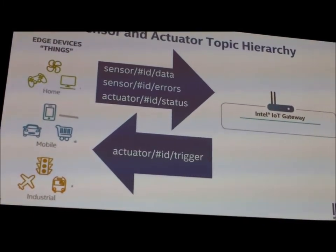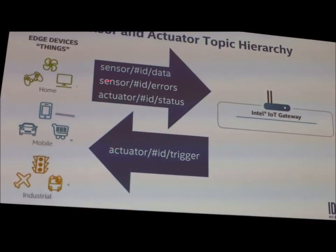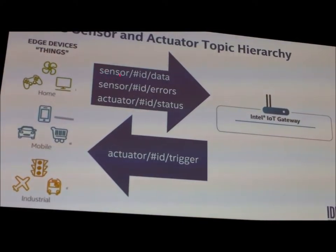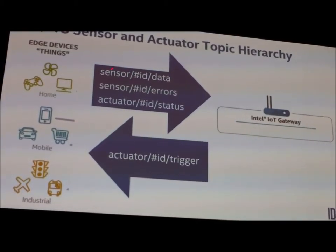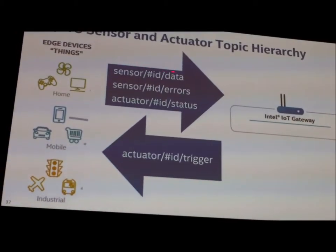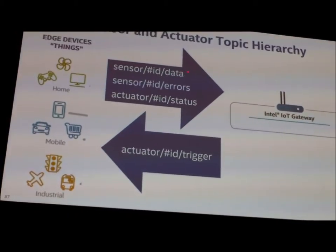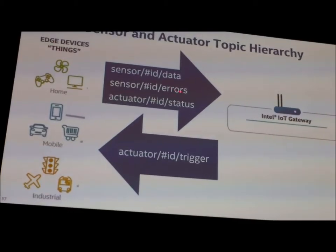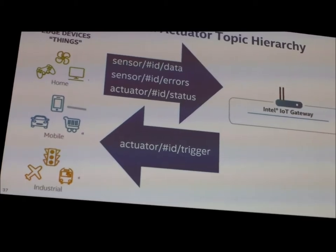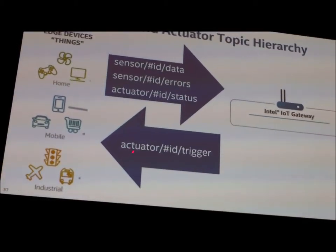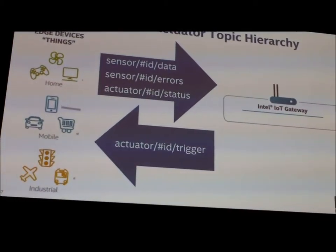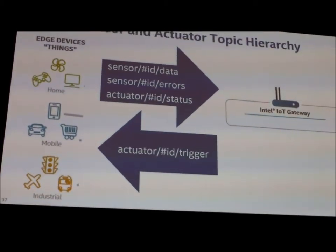For our data, we created MQTT topics. For every sensor on the network, sensors are organized into a hierarchy with a unique ID, and each sensor has data associated with it. We also created an error channel, an actuator status channel, and an actuator trigger channel — though the trigger channel has been recently obsoleted in favor of HTTP and REST calls.